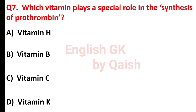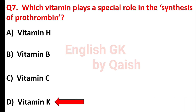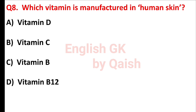Which vitamin plays a special role in the synthesis of prothrombin? Answer is option D, vitamin K. Which vitamin is manufactured in human skin? Answer is option A, vitamin D.